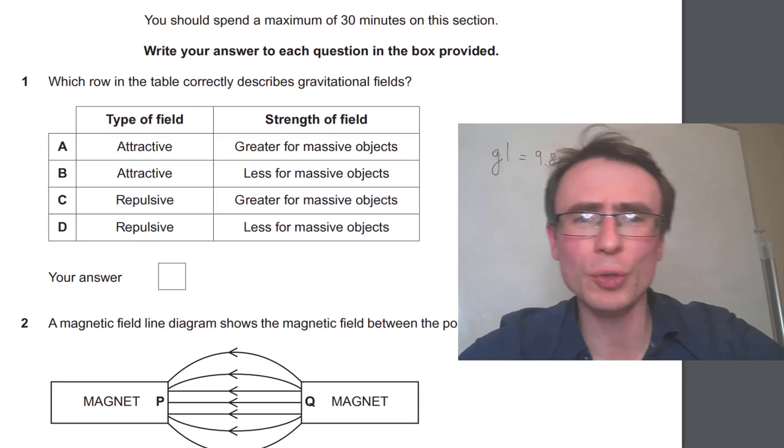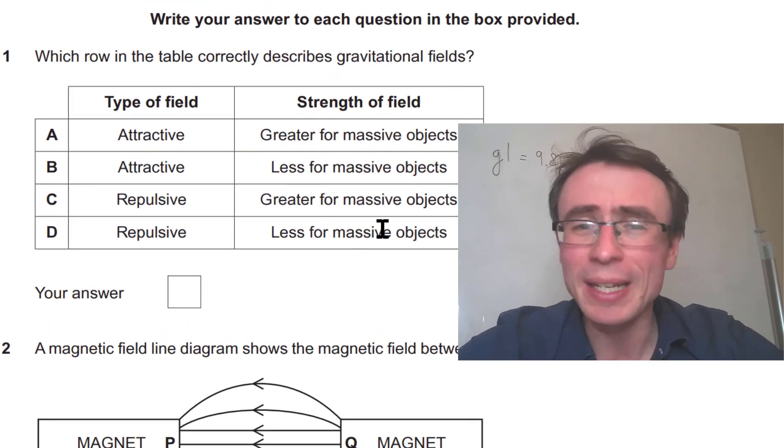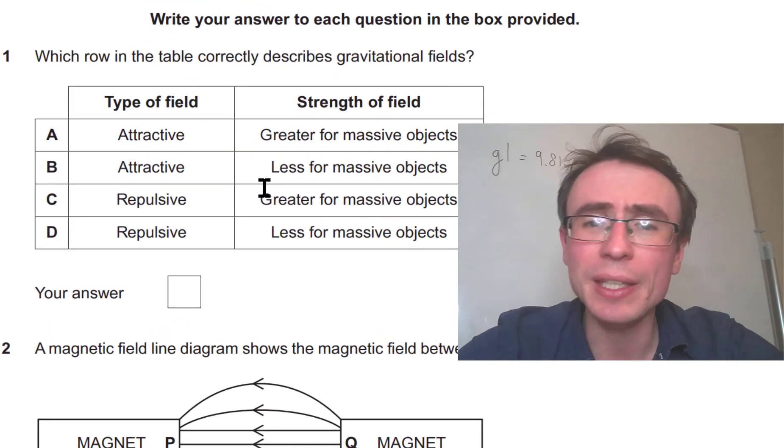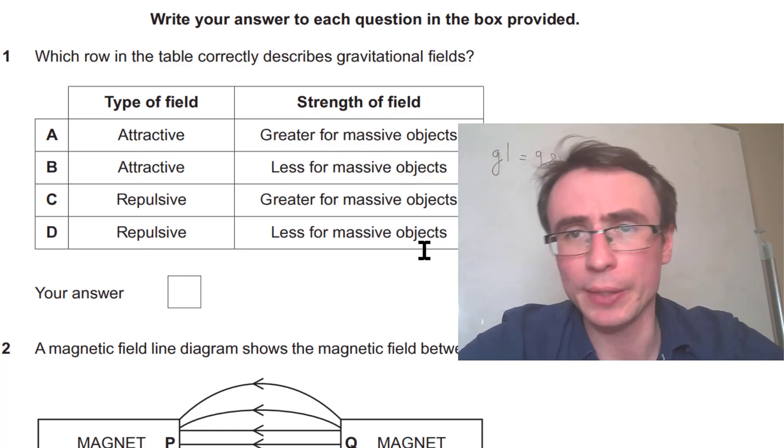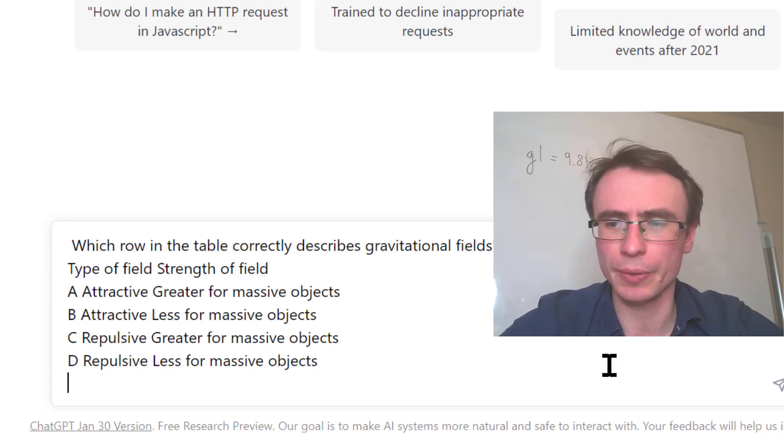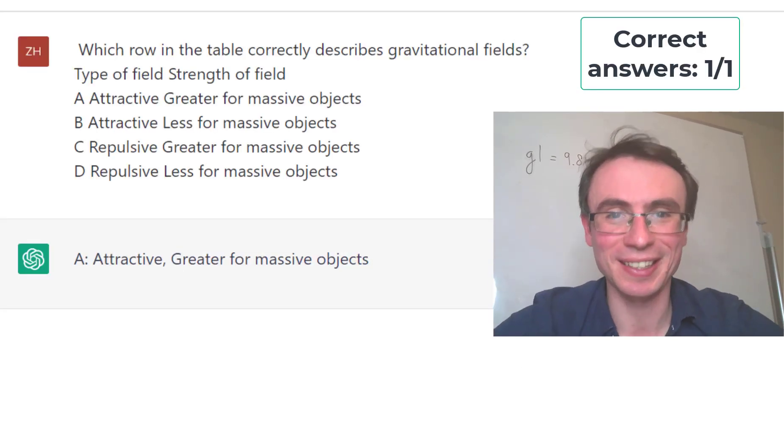Question one, which row in the table correctly describes gravitational forces? Now the correct answer here is A, they're both attractive and they're greater for more massive objects. So let's see how ChatGPT handles that. It's gotten it correct.